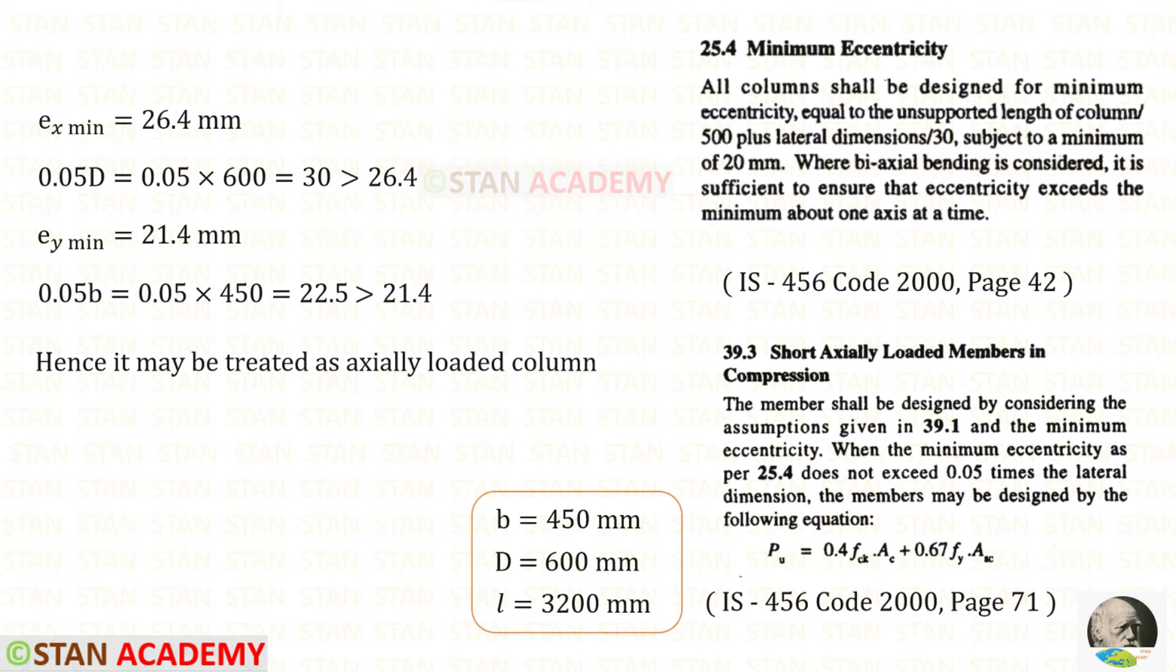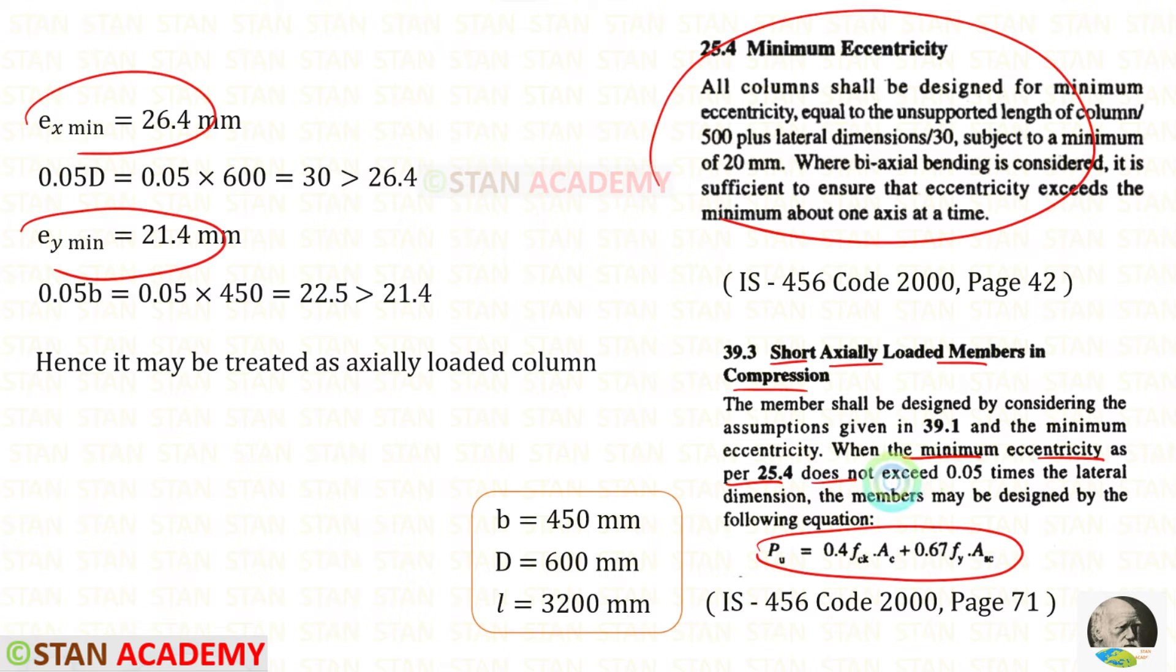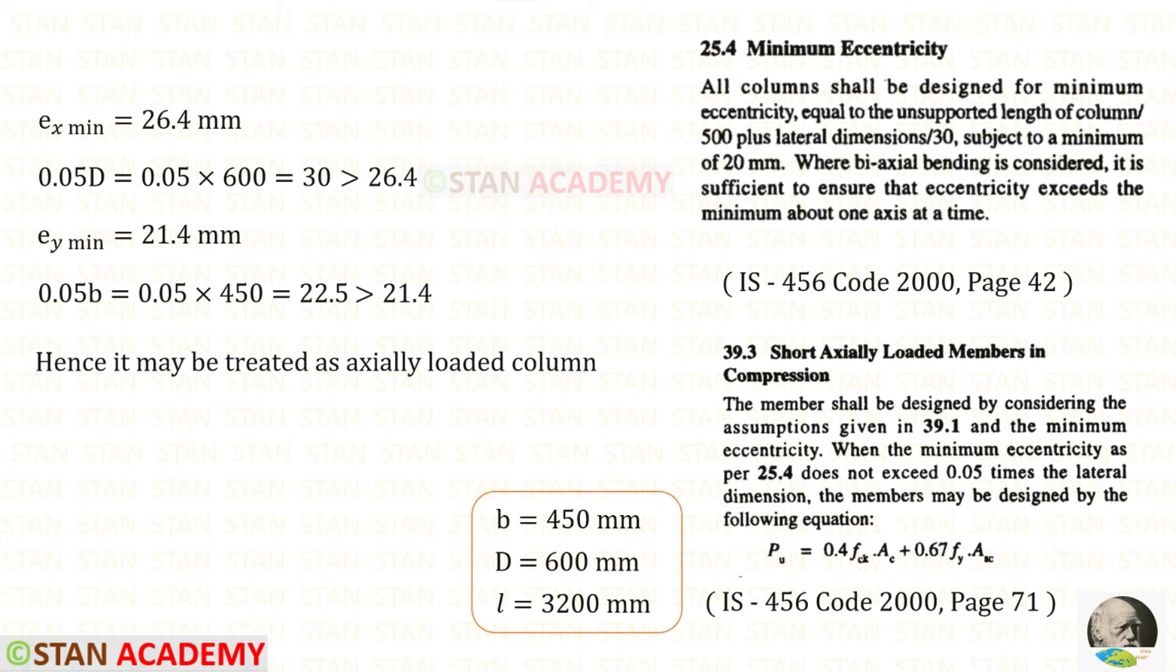Now in this code book let us open the page number 71. Let us see the clause 39.3 for the short axially loaded members in compression. To find the area of the concrete and reinforcement we can use this formula. But there is one condition. The minimum eccentricity as per 25.4 does not exceed 0.05 times the lateral dimensions. In our case there are two lateral dimensions D and B. For 0.05D we will get 30 which is more than 26.4. So the minimum eccentricities does not exceed 0.05 times the lateral dimensions. Hence this column may be treated as axially loaded column. We can use this equation.